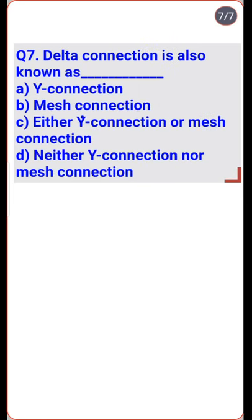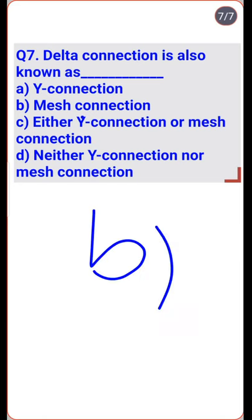Delta connection is also known as mesh connection because its structure is like a mesh — a closed loop which is planar — so option B is the right one.